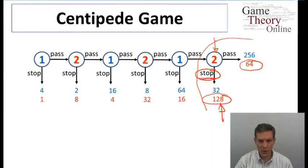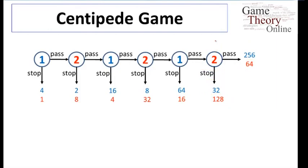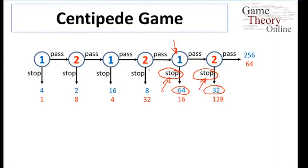Here's where we begin to solve the game backwards. Anticipating that player two is going to stop at the last move, player one is faced with either 32 or 64 if called upon to move at the second-to-last node. What are they going to do? There's now a clear prediction for them, which is to stop here. So we end up with stop at this point, stop at this point. If we keep moving back, we'll end up with the same logic — player two is looking at 16 or 32 and should certainly stop.